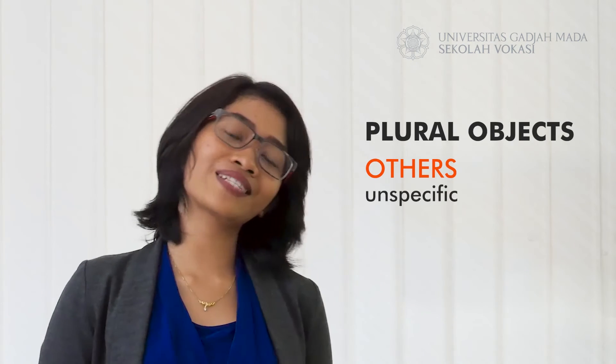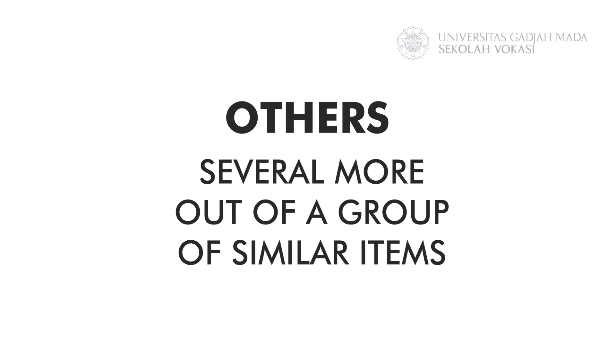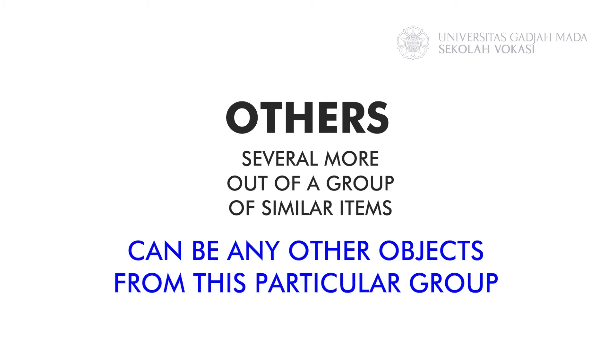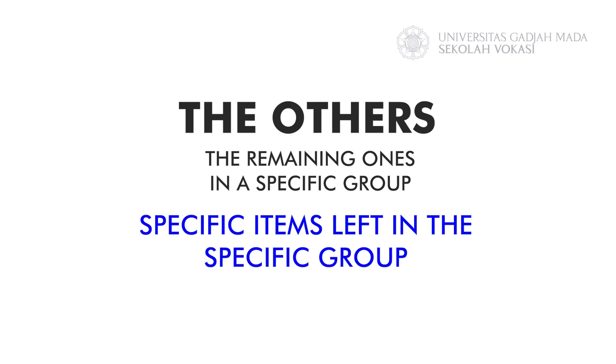For the next part, we are going to discuss the forms of 'other' for plural objects. For plural objects, you can use 'others' for unspecific objects and 'the others' for specific objects. 'Others' without 'the' means several more out of a group of similar items — they can be any other objects from that particular group. Meanwhile, 'the others' means the last or remaining ones in a specific group — they are specific items left of the group.